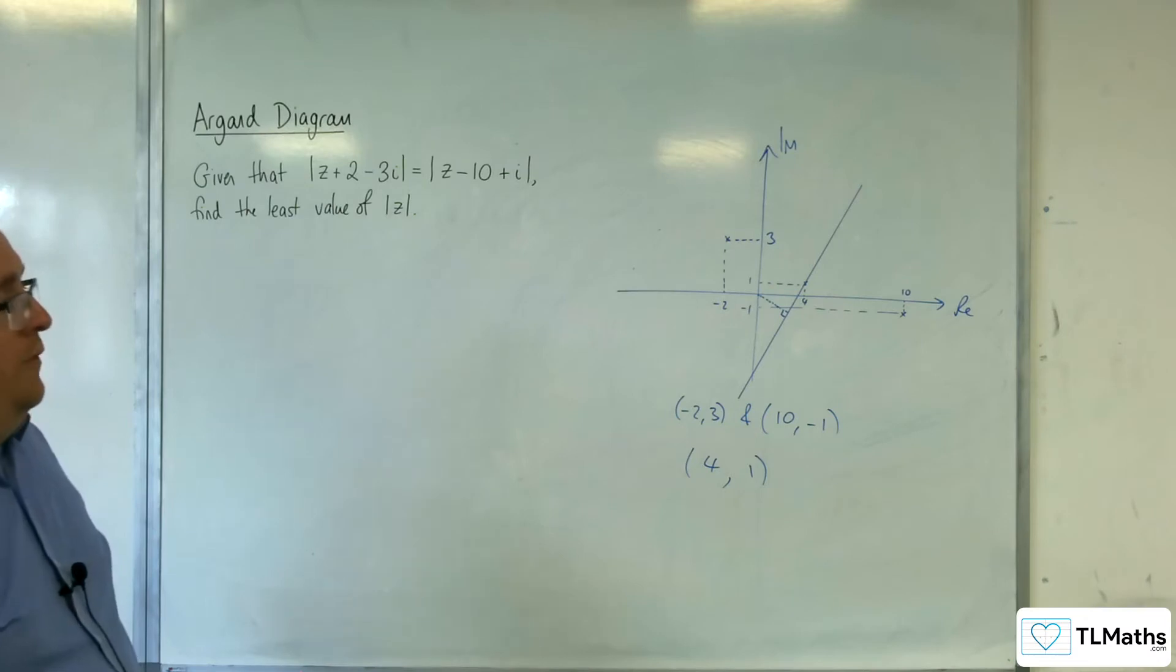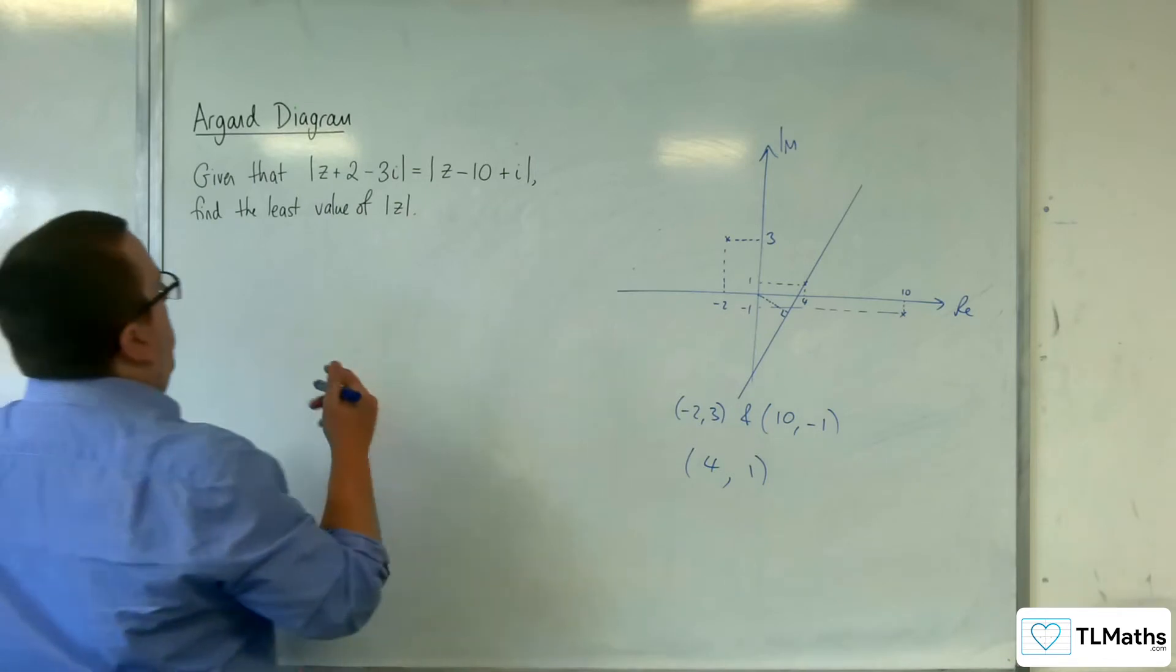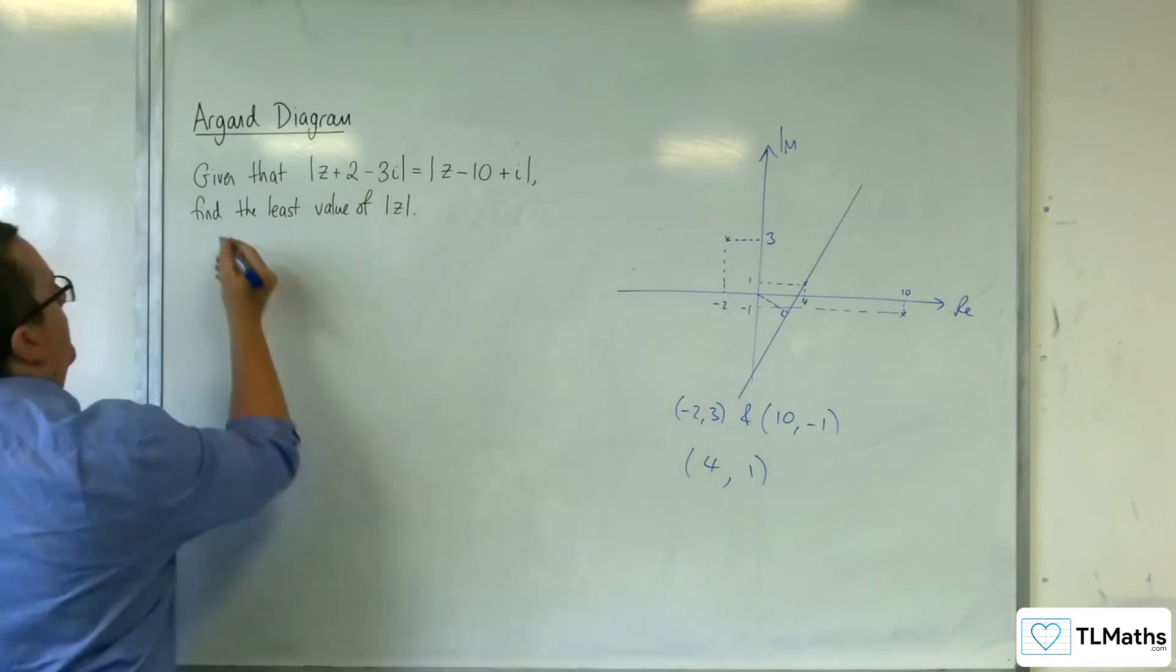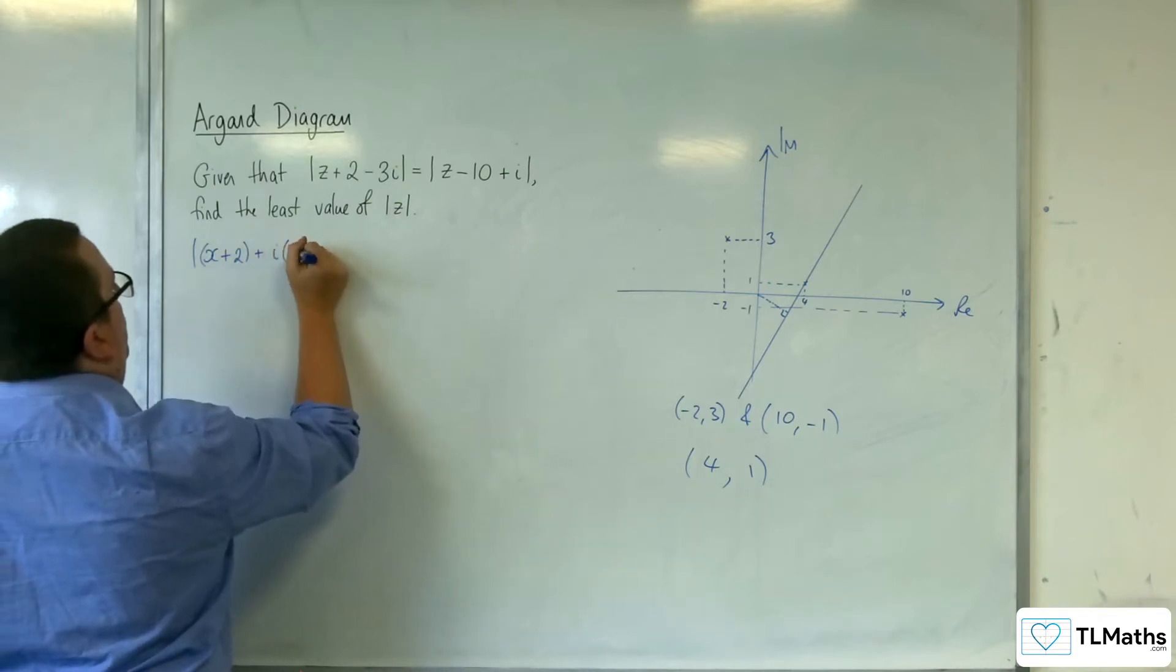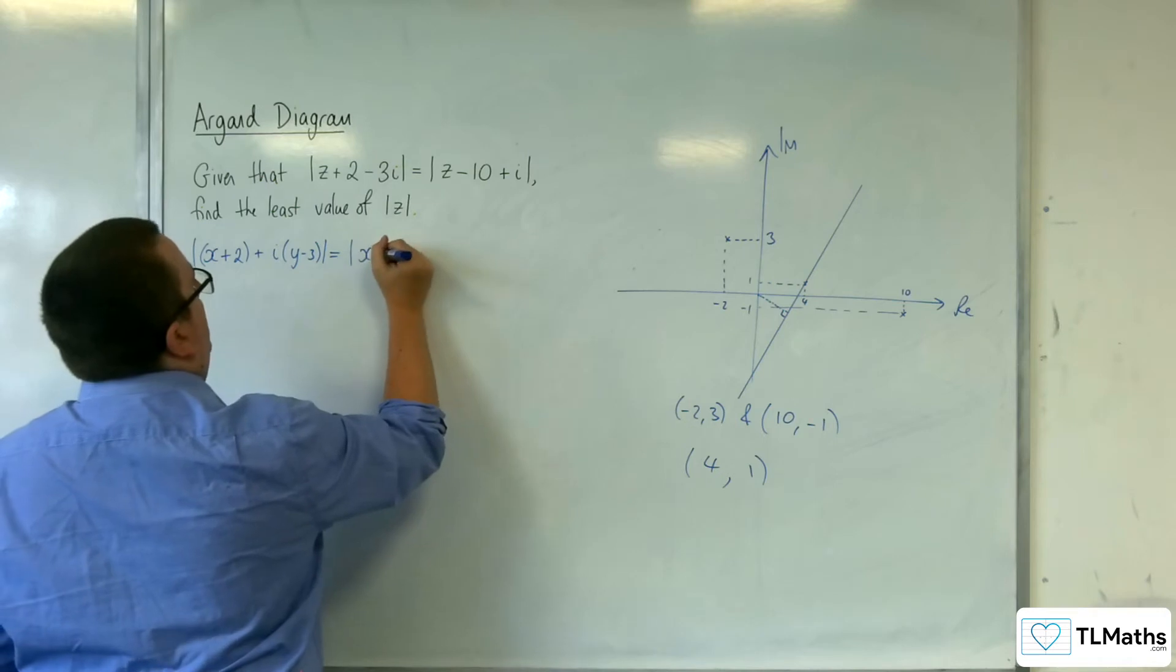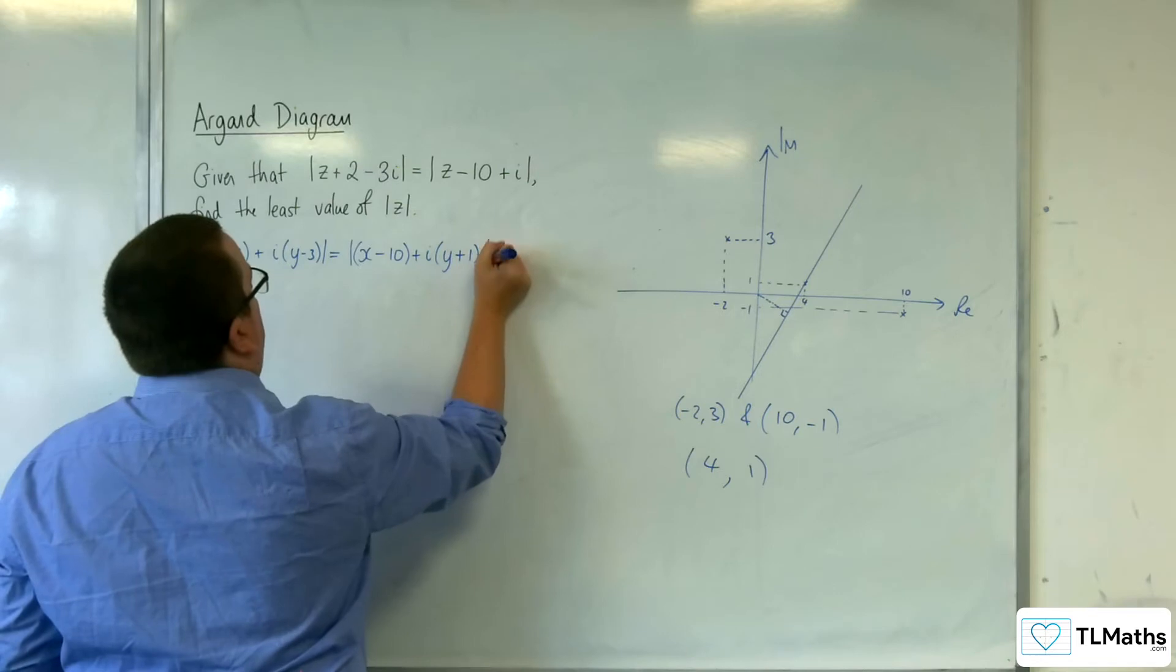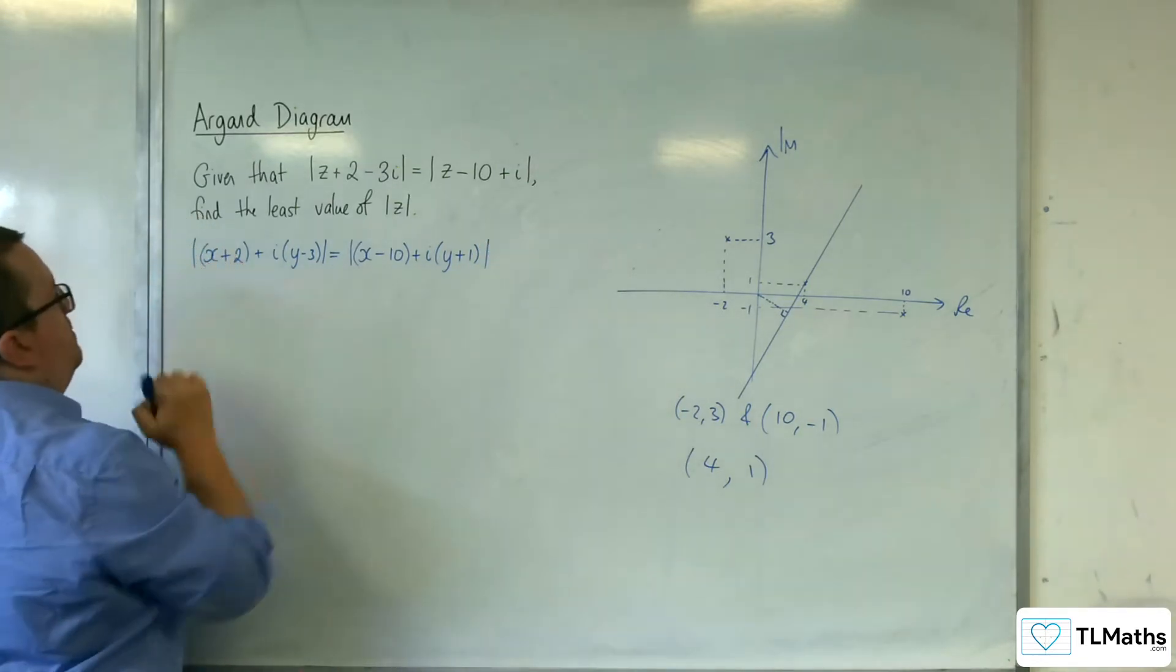So let's work out the equation of the perpendicular bisector first. We've got x plus iy plus 2 take away 3i. So we're going to have x plus 2 and then plus i times y take away 3, is equal to the modulus of x take away 10 plus i times y plus 1.